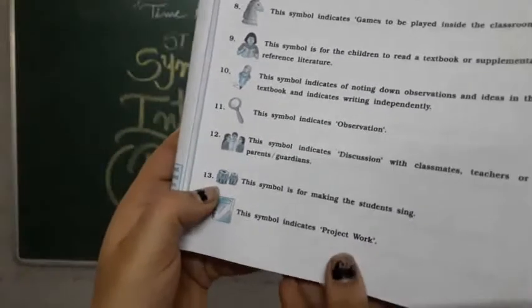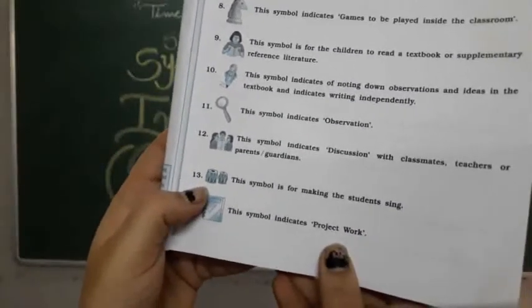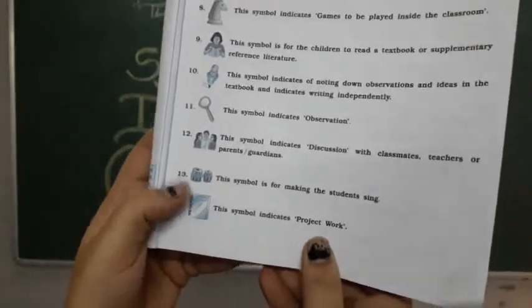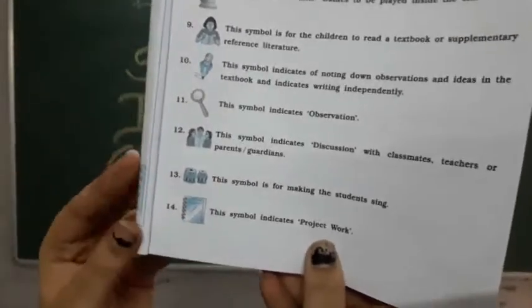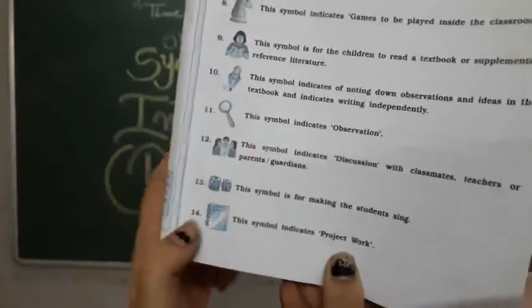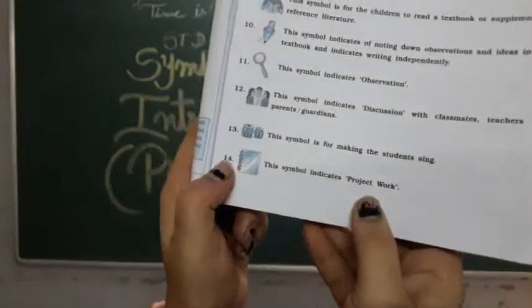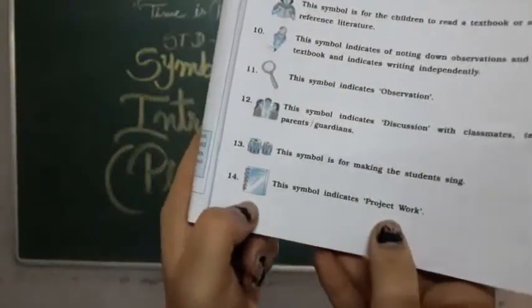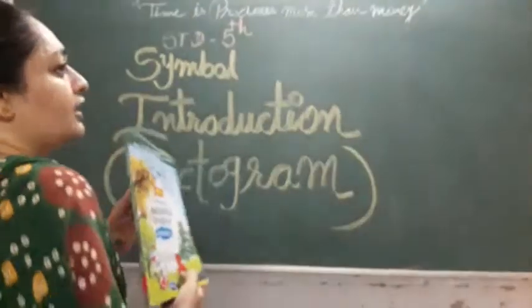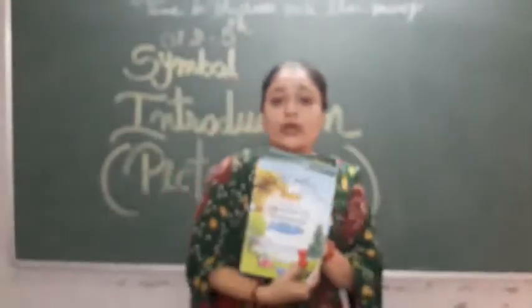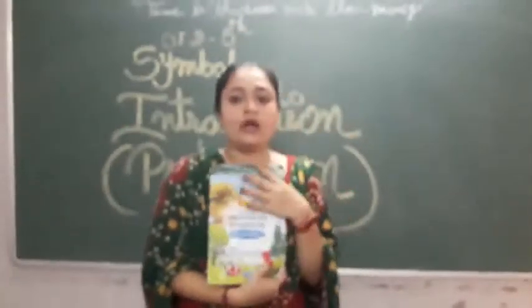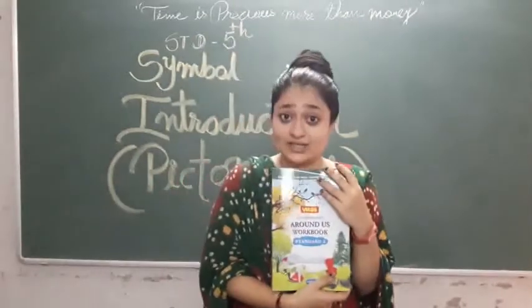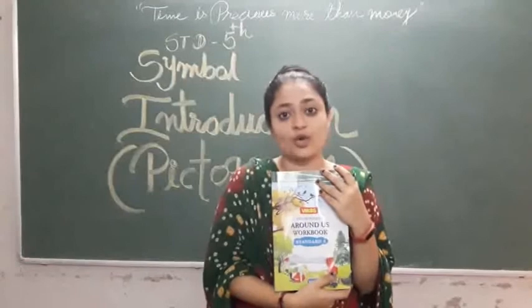Number eleven: this symbol indicates observation. This symbol indicates discuss with teachers, parents and guardians. This symbol is for making the student think and sing. This symbol indicates project work. This is the finish — this is your textbook and workbook introduction. See you in the next lecture, stay safe.